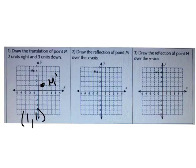Now draw the reflection of point M over the x-axis. Go ahead and do that now, then enter the ordered pair for M' in the blank.